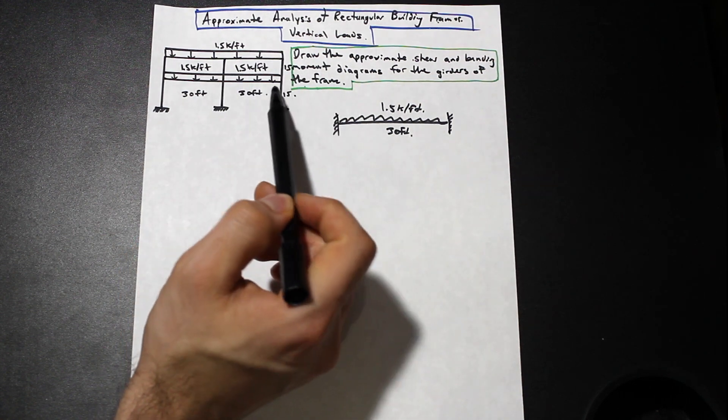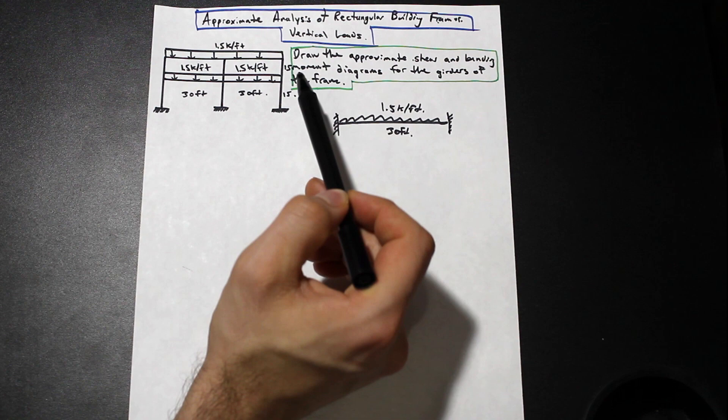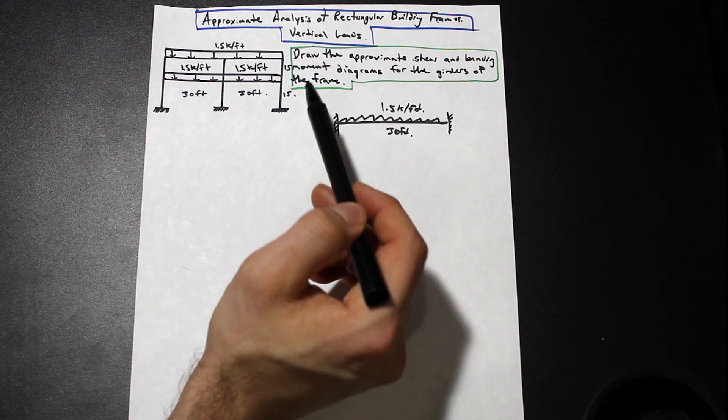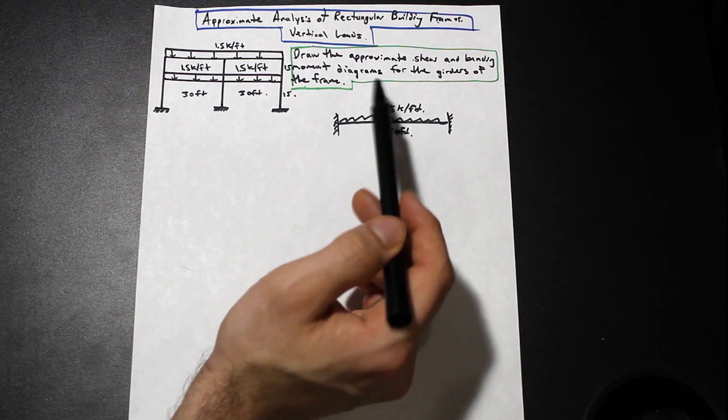We don't know exactly how much restraint. We'll get to that in a bit. And we're asked to draw the approximate shear and the bending moment diagrams for the girders of the frame.